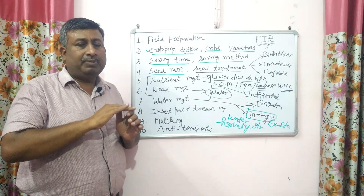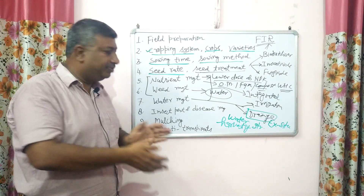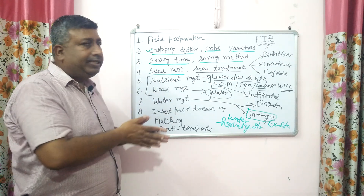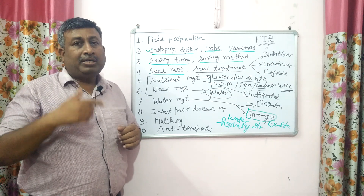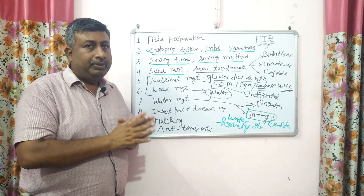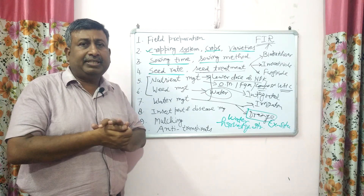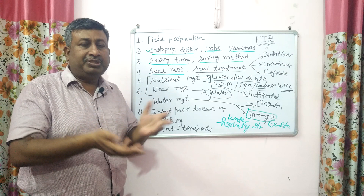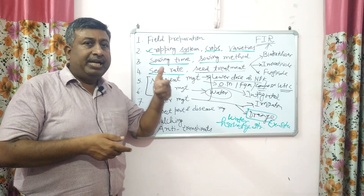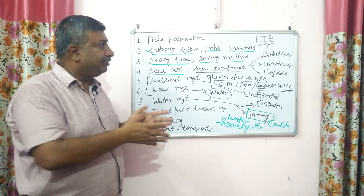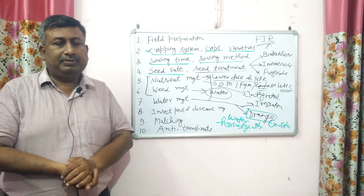These are the different efficient crop management practices in rainfed areas, which are aimed at maximizing water use efficiency — more crop per drop. These efficient management practices are entirely different from irrigated conditions, where the focus is on maximizing crop productivity. In rainfed areas, we try to maximize water use efficiency. These are the common practices important to increase crop production in rainfed areas. Thank you very much.